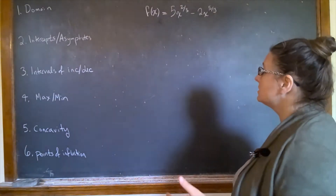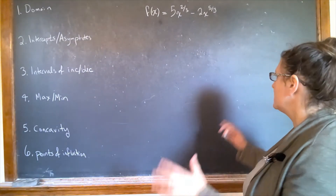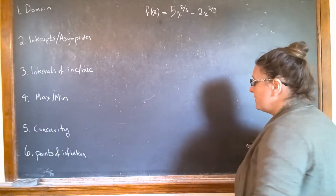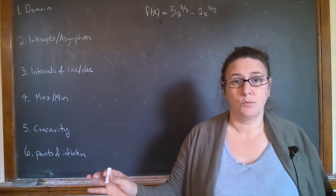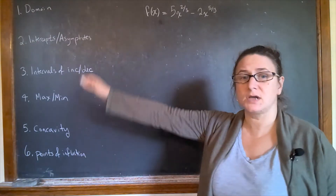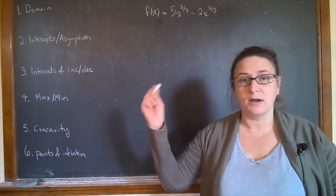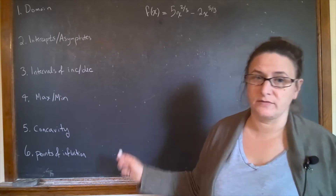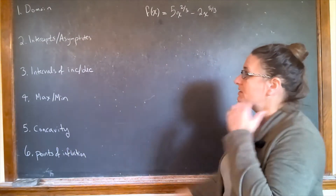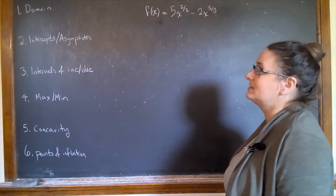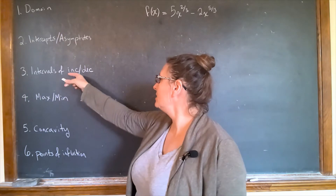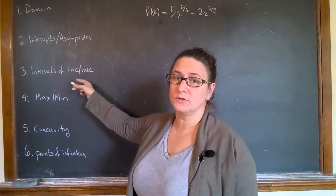The issue is we want to make sure that all the information is not only on the graph but also somewhere we can see it. That's why I like to stick it on the side all together in one place, rather than having calculations everywhere. I've abbreviated: intervals of increase and decrease.